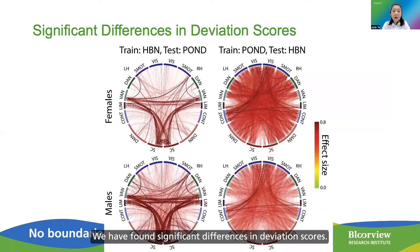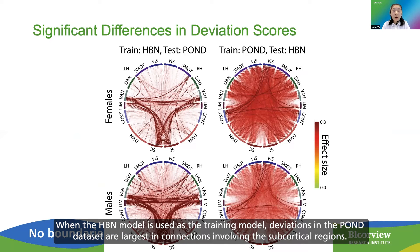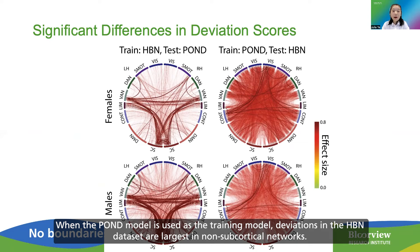We have found significant differences in deviation scores. When the HBN model is used as a training model, deviations in the POND data set are the largest in non-subcortical networks.